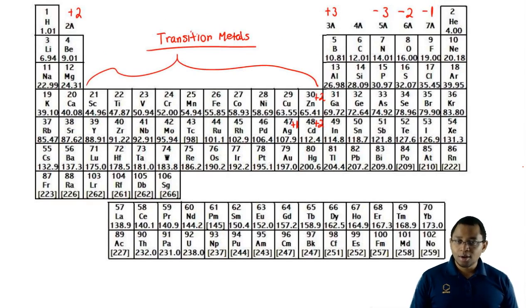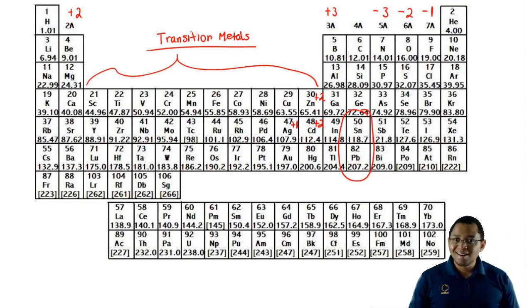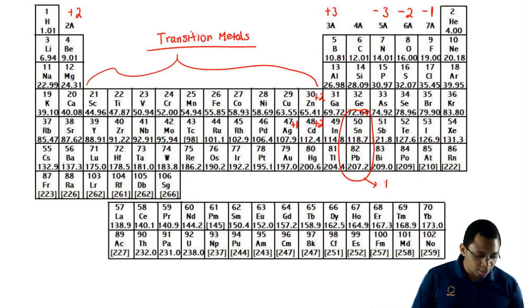There's another weird thing that goes on. Tin and lead here, both of them are not transition metals, but they act like it because they have more than one positive charge. Both of them could be either plus 2 or plus 4.